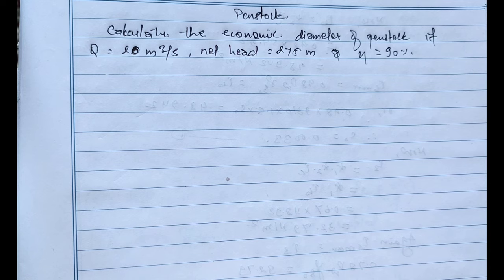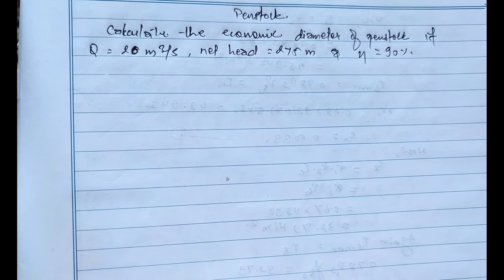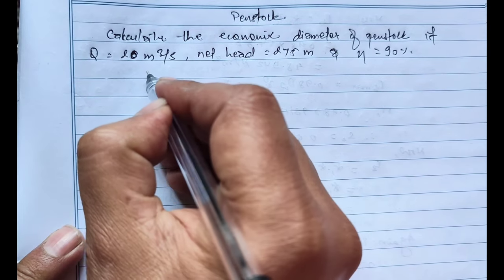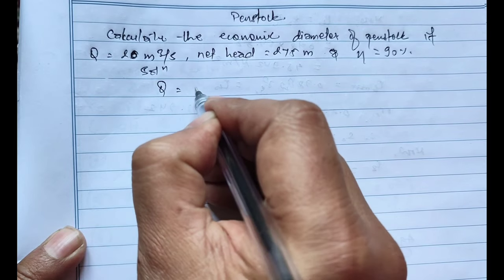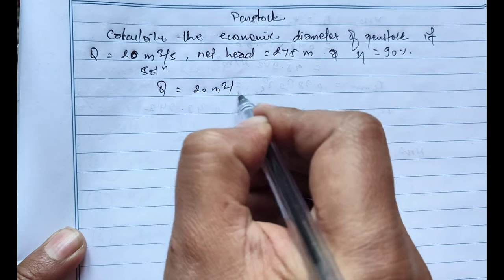First we will carry out the given data. Where the given data are: Q equals 20 meter cube per second, head H equals 275 meters.